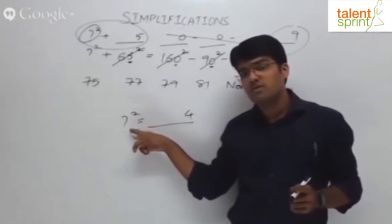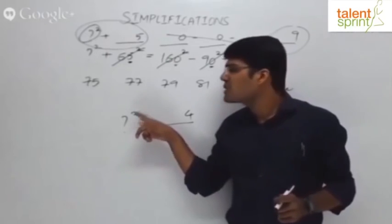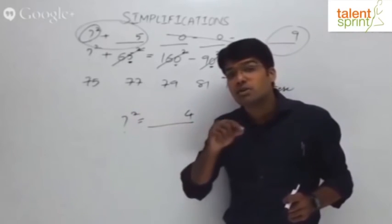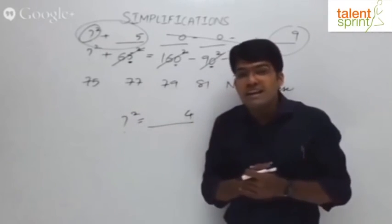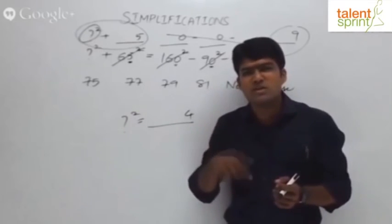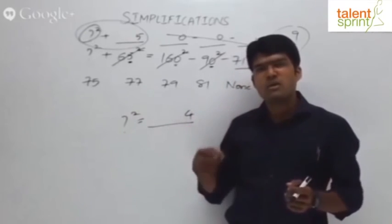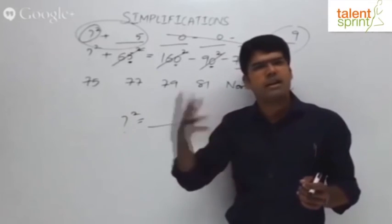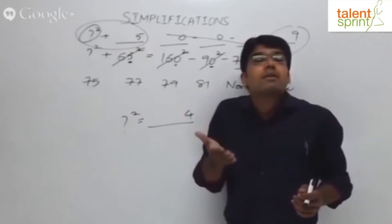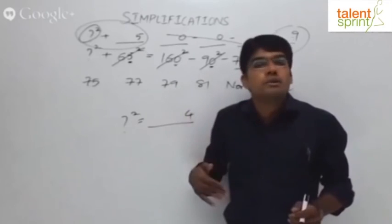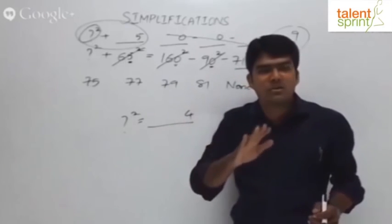Question mark squared should end in 4. Now when does the square of a number end in 4? This is a square, something should come in place of question mark. What square will end in 4? Either the number should end in 2 or the number should end in 8. 2 squared is 4, 8 squared is 64 ending in 4. 12 squared is 144, 18 squared is 324, and so on.